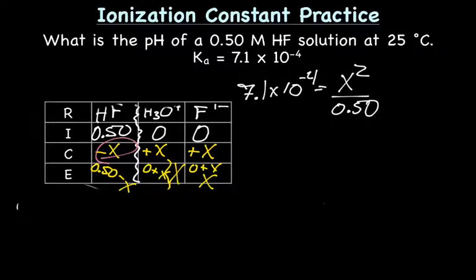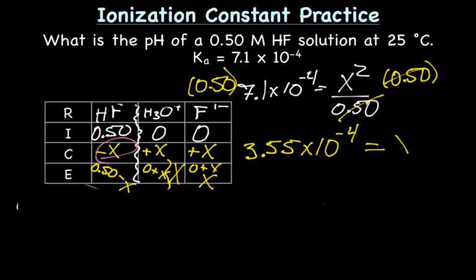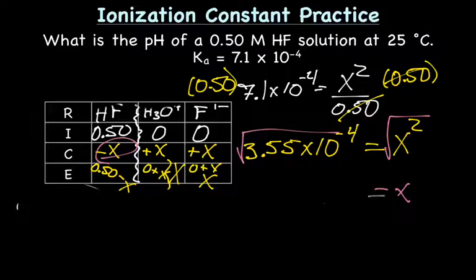Alright, so now the goal is to solve for X. So to get rid of the 0.5, we'll multiply both sides by 0.5, giving us 3.55 times 10 to the negative 4 equals X squared. Alright, now to get rid of the X squared, we can square root both sides, giving us 0.019.